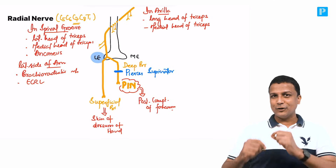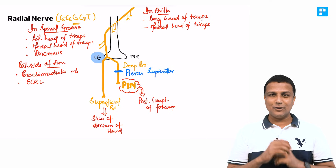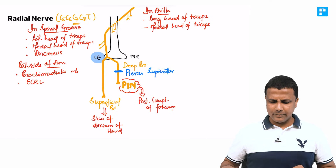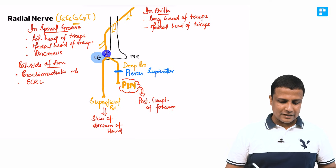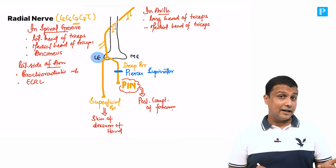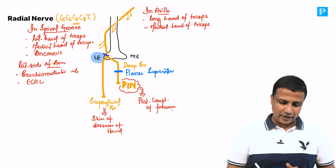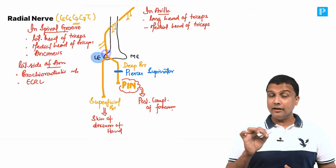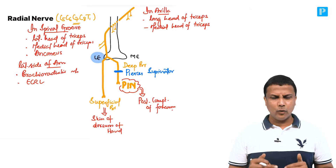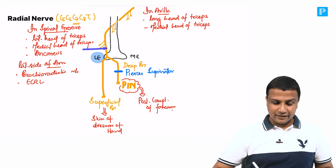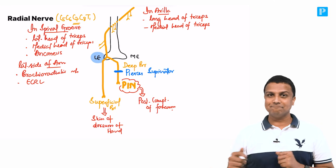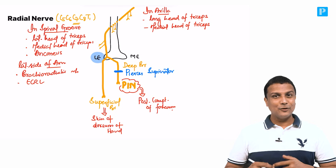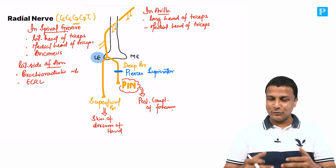Similarly, if there is injury to the radial nerve near the lateral aspect of the arm or near the lateral epicondyle, the only thing that will be spared is the triceps. Leaving that, everything else will be the same. In this manner, just keep applying the principle I told you — that is how you integrate anatomy with orthopedics.